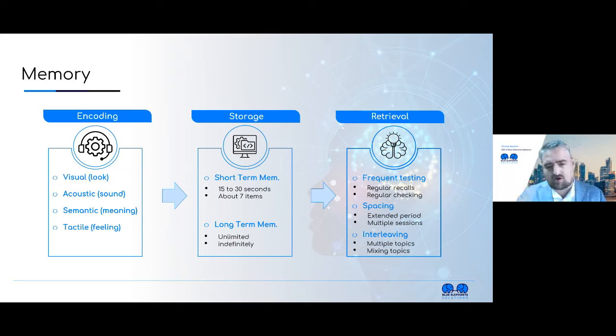When it comes to storage, all of you know that you have a short-term memory, which normally lasts 15 to 30 seconds, and you can remember roughly seven items. What you need to do is move this important information into your long-term memory. How does your brain know it's important? Well, you need to repeat it. It needs to show up again, and your memory will understand that is important information. That storage is unlimited and indefinite.